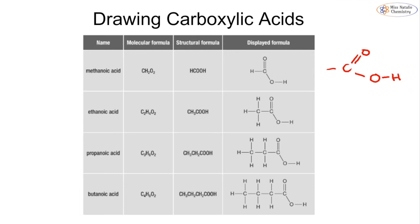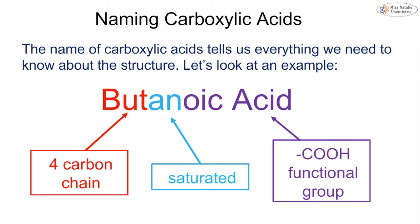When naming carboxylic acids, the name tells us everything we need to know about the structure, just like with alcohols. The prefix tells us the carbon chain length — 'but' for four carbons, or 'meth', 'eth', 'prop' for one, two, or three. The 'an' tells us it's saturated with no double bonds. The 'oic acid' ending tells us we have the COOH functional group. For anything above four carbons, you would be given information as it would be a problem-solving question — you're not expected to have more than four carbons memorised.